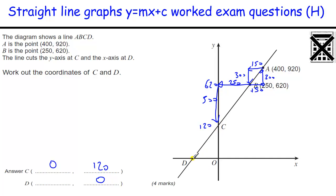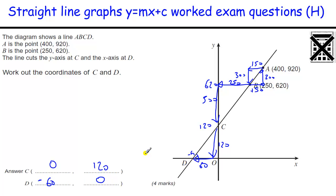To do this one, I work out I've got to come down another 120. How far across do I go? If going up 300 means going across 150, then going down 120 means going across 60. And that's minus 60 because it's plotted over here at minus 60.